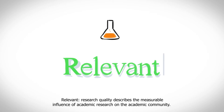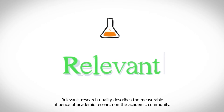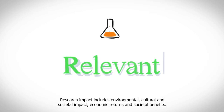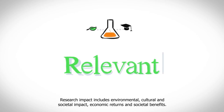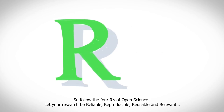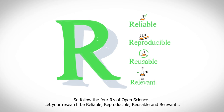Relevant. Research quality describes the measurable influence of academic research on the academic community. Research impact includes environmental, cultural, and societal impact, economic returns, and societal benefits. Follow the four R's of open science: let your research be reliable, reproducible, reusable, and relevant.